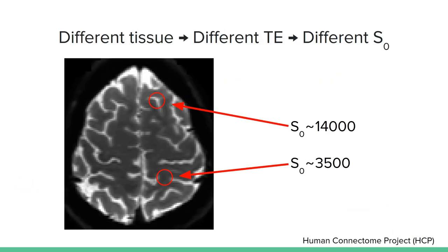You can see here an example of an axial slice of the S₀ image of a healthy subject from the Human Connectome Project database. Dark regions correspond to white matter, while bright regions correspond to CSF. You can see how there is a factor of four between the S₀ intensity in the white matter and the S₀ intensity in the CSF. This confirms the theoretical observations we made in the previous slide, also from an empirical point of view.